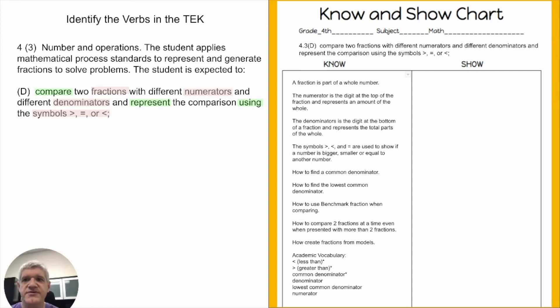Now let's look at how they're going to show that they know that. I'm going to look at the verbs: they need to compare, represent, and then using the symbols. So when given two fractions with different numerators and denominators, students need to be able to determine which one is greater than the other and/or if they're equal. They need to be able to, when comparing fractions, use the correct symbols to represent that comparison.